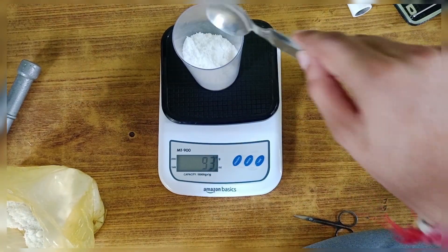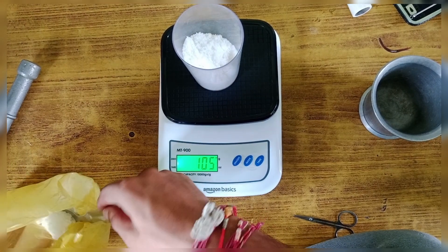For the second batch, I went with 70% potassium nitrate and 30% sugar.